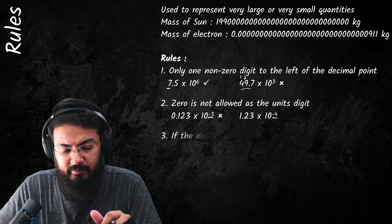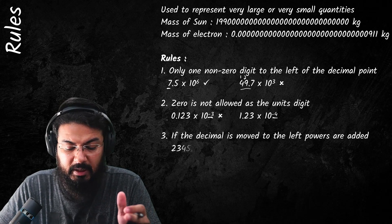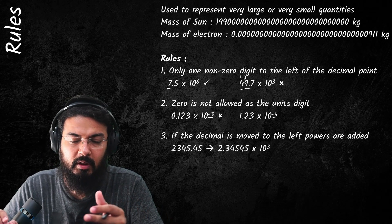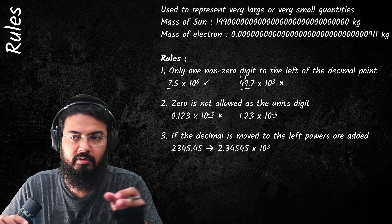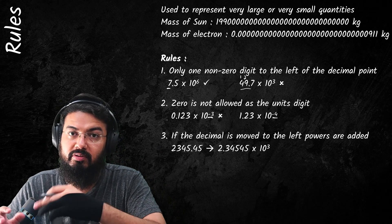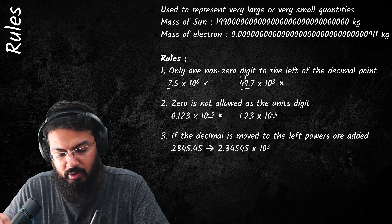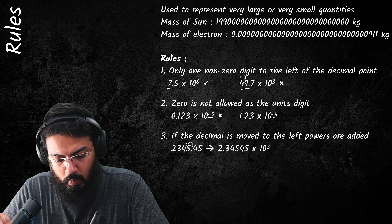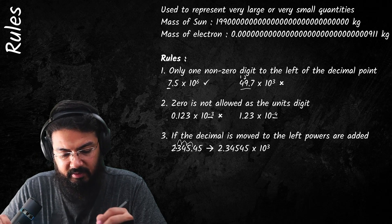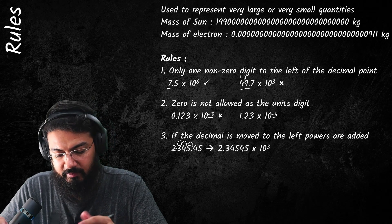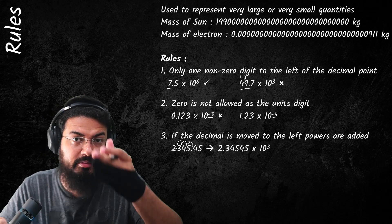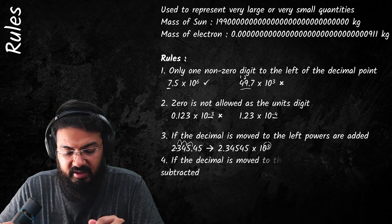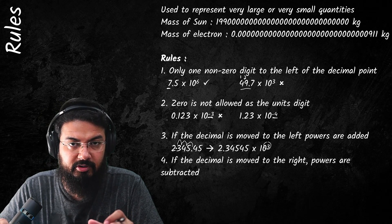If the decimal place moves to the left, powers are added. This is how you convert anything to standard form. For example, starting with 2345, we move the decimal place one, two, three units to the left, giving us 2.345. Because we moved three units to the left, we add the power 10 raised to the power 3.